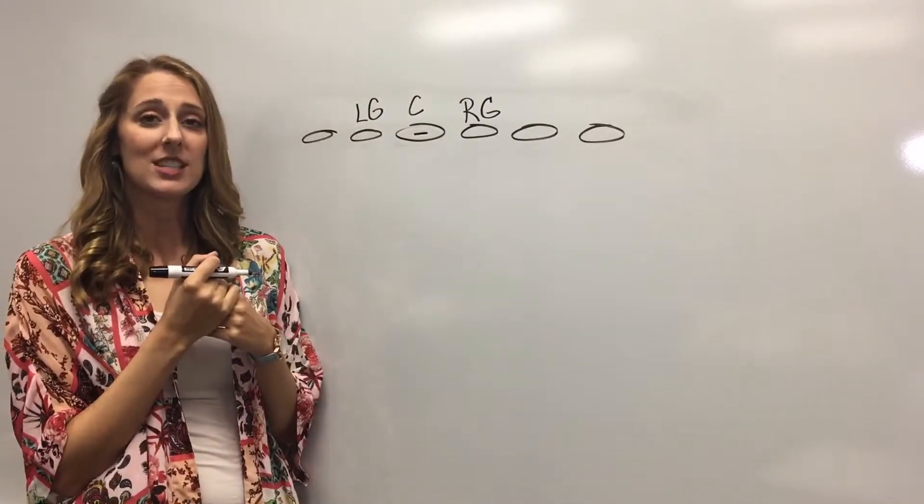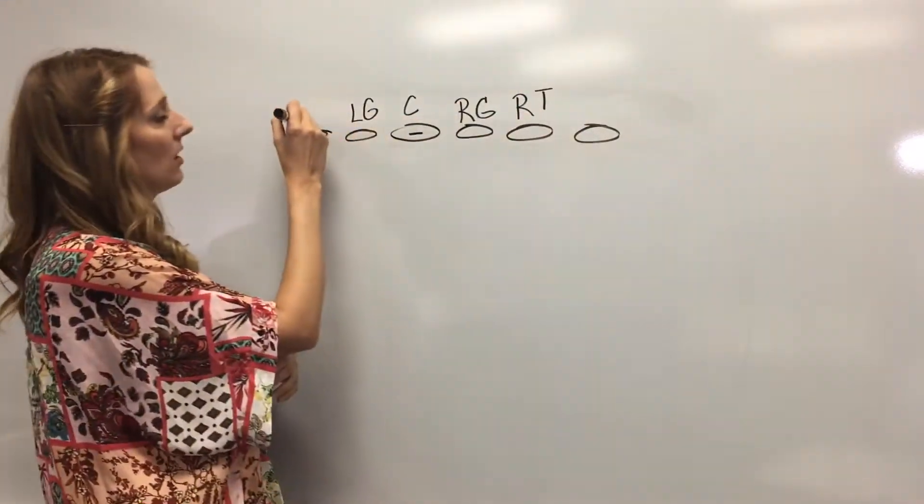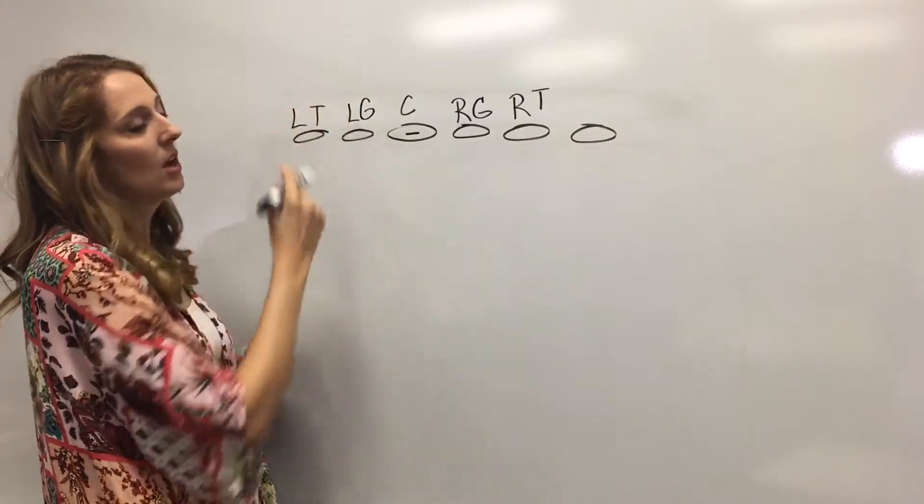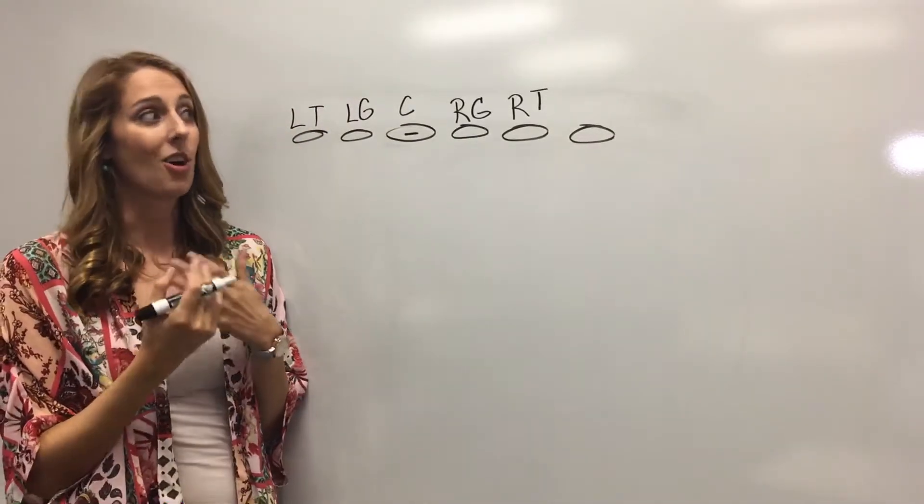Now next to our guard comes our tackle. Some people get confused between the guards and the tackles. The easy way to remember it comes in alphabetical order. G before T, guard before tackle.